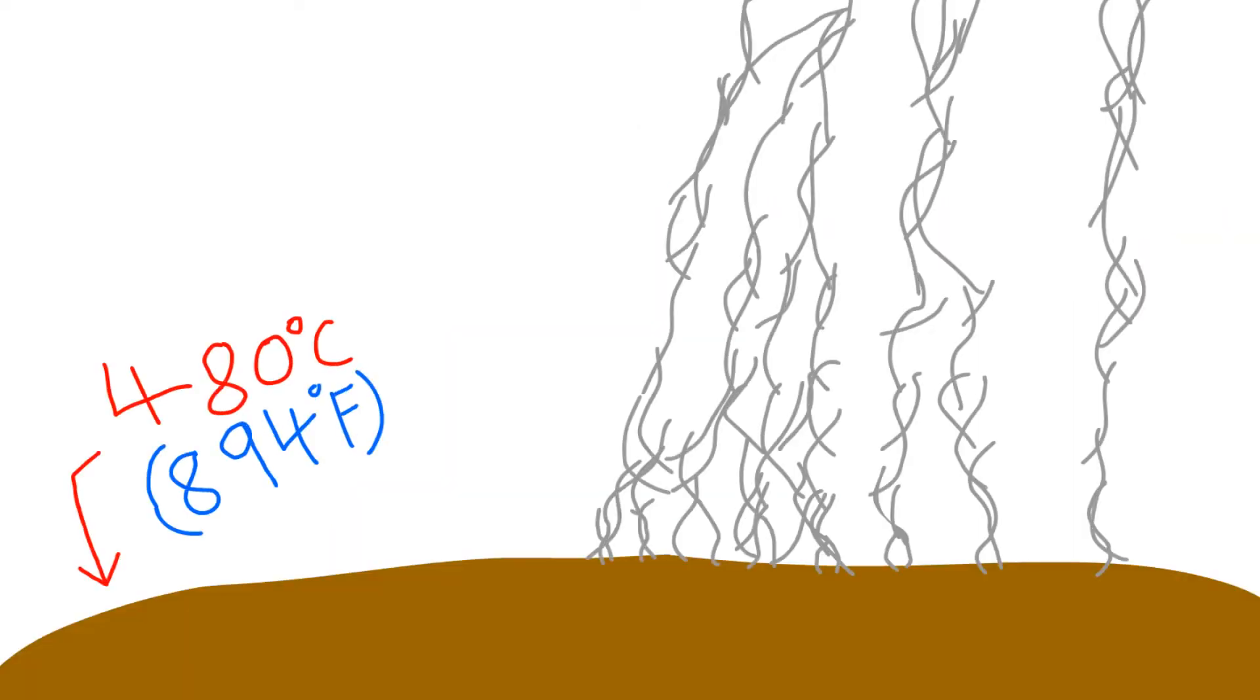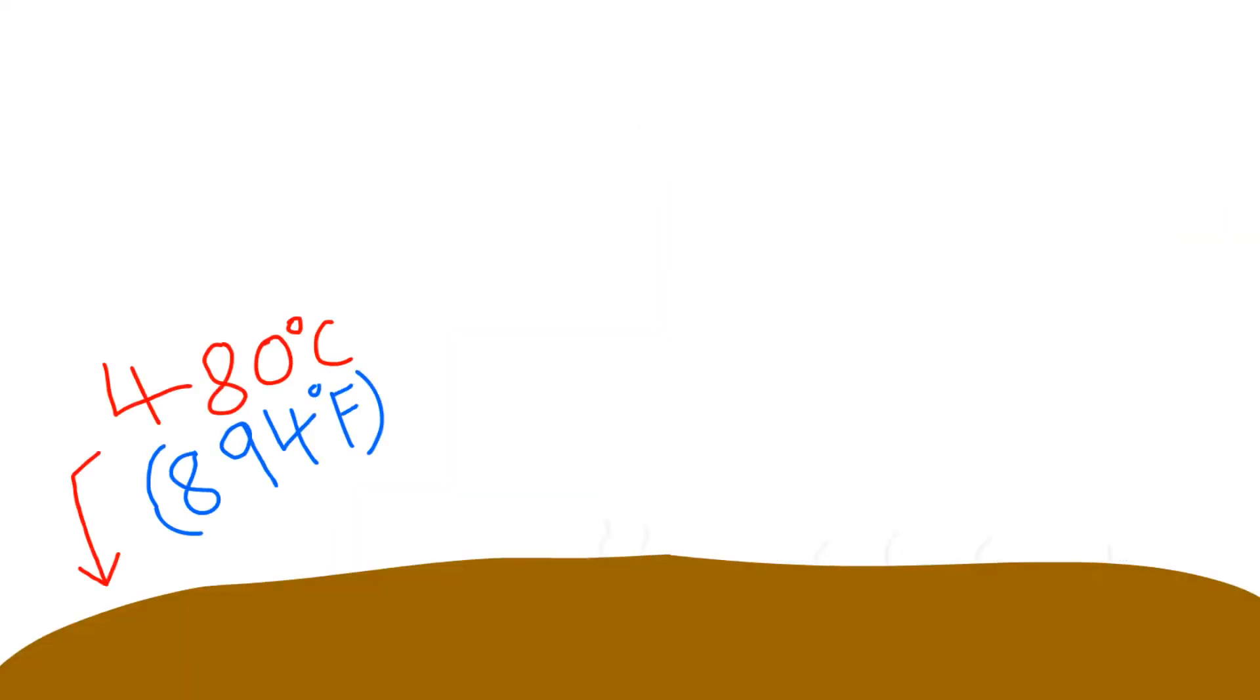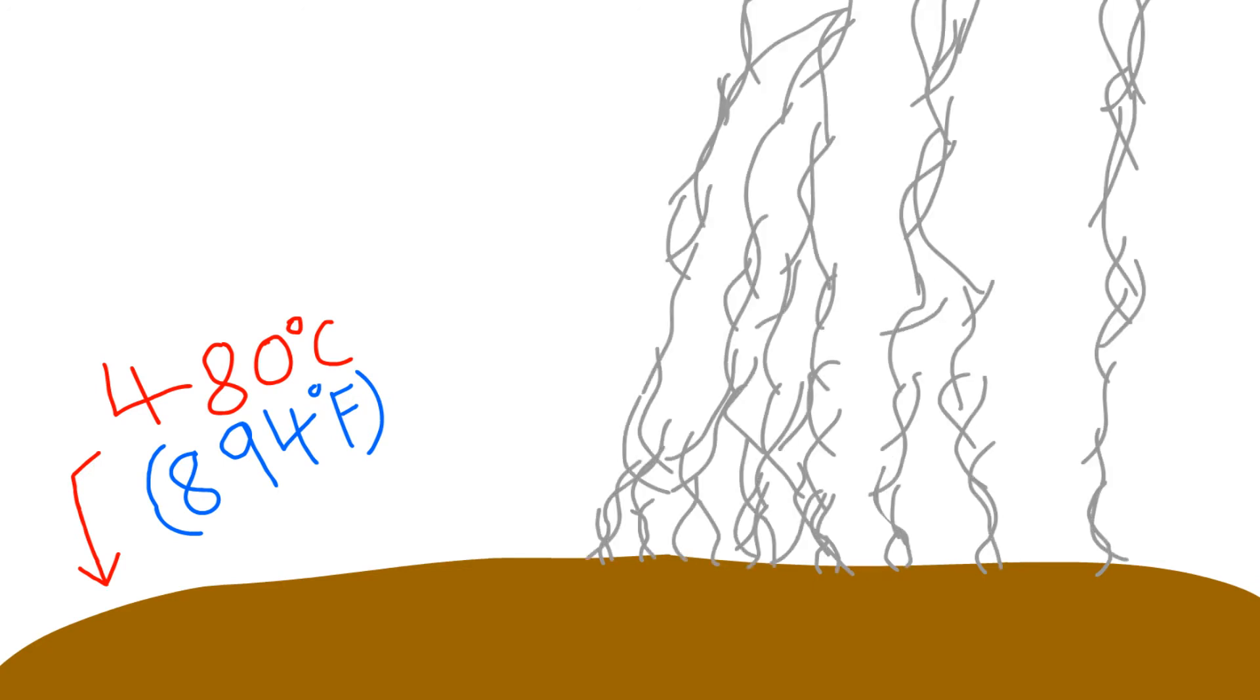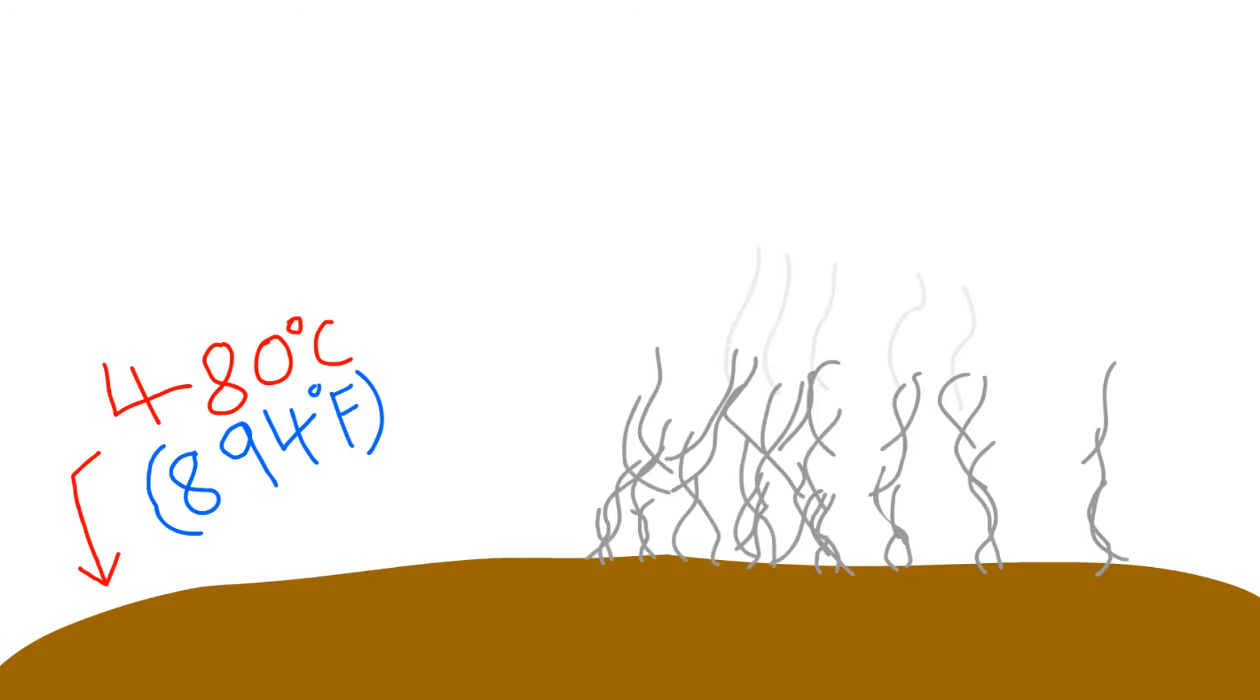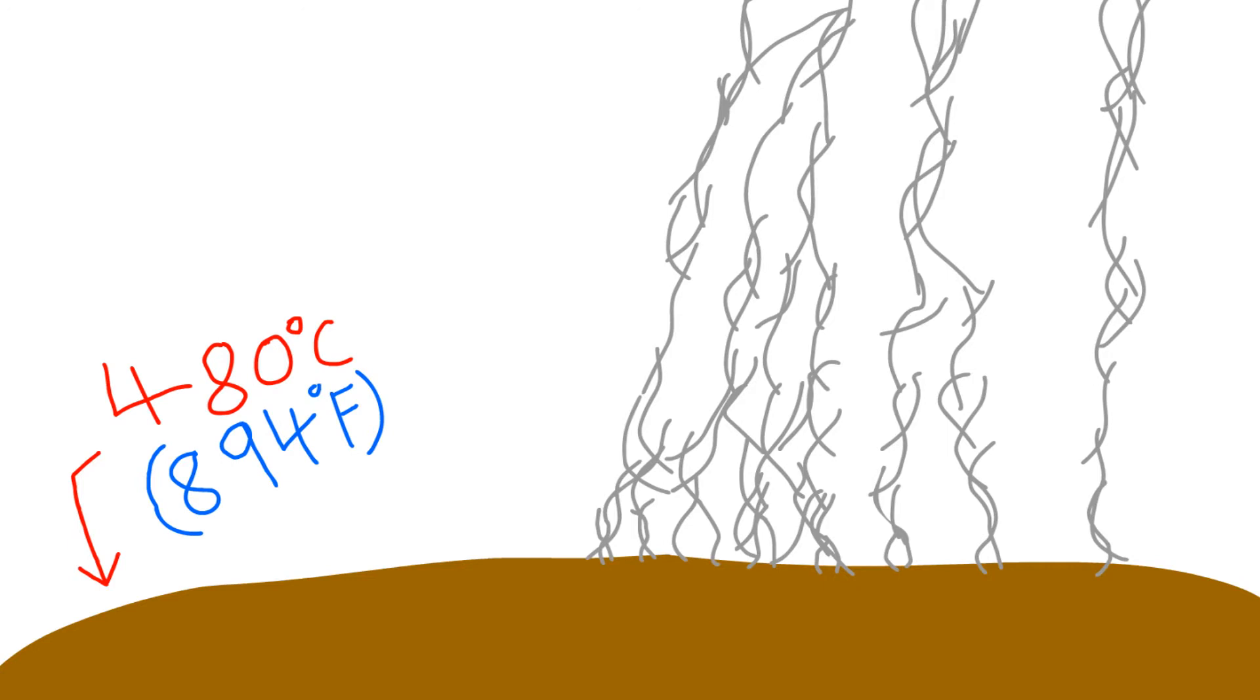So how does it get there, I hear you ask? Well, on the plains of Venus, it's really, really hot, 480 degrees roughly, which is hot enough to melt the reflective pyrite minerals on the planet's surface and vaporize them, so they rise